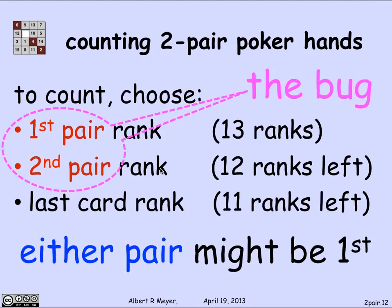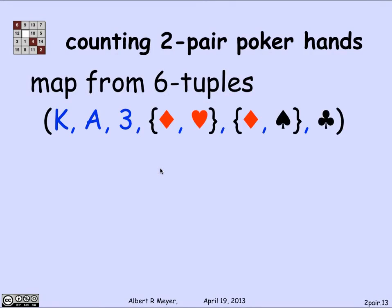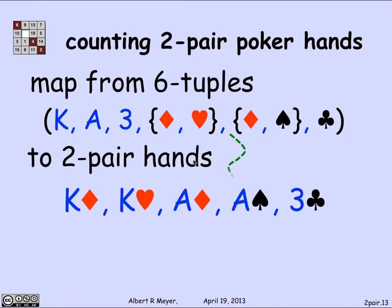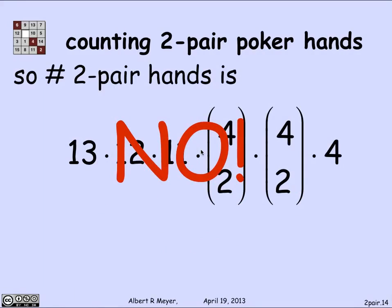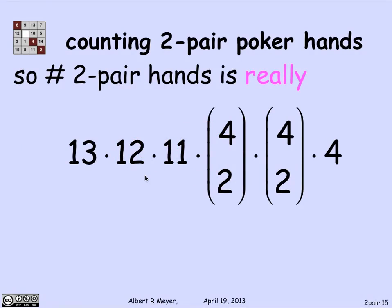Since either pair might be listed first, the map from six-tuples to two-pair hands is actually a two-to-one mapping — not a bijection — because there's no difference between the first pair and the second pair. Now that we recognize this, we can fix the formula: by the division rule, we simply divide the previous count by 2, and that gives the correct number of two-pair hands.